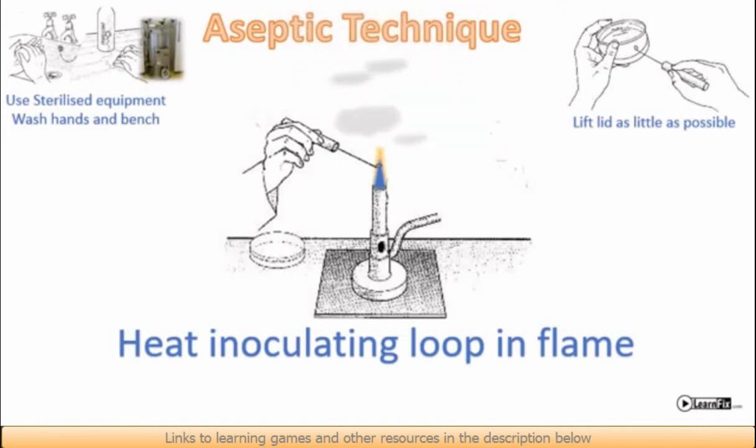Wire inoculating loops which are used to transfer bacteria have to be passed through a Bunsen flame until the wire glows red and then allowed to cool and that will kill any bacteria that are already on the loop from previous inoculations or from falling out of the air.